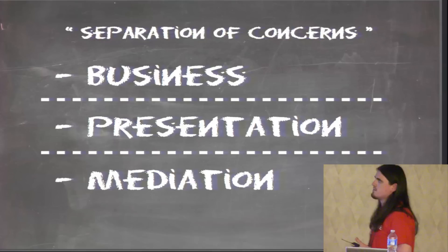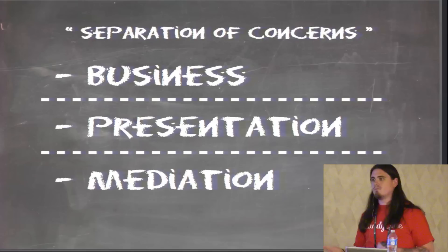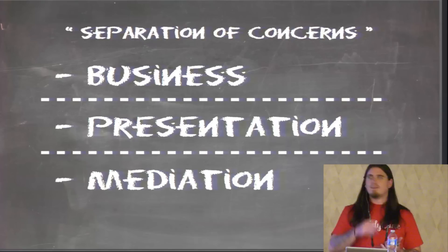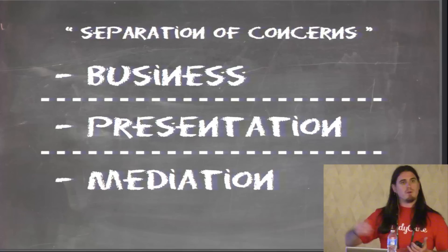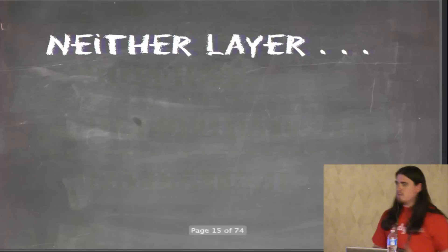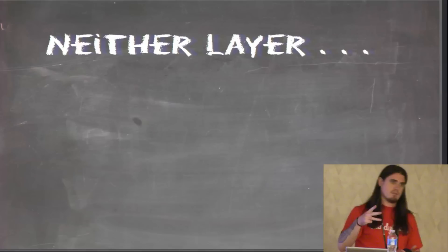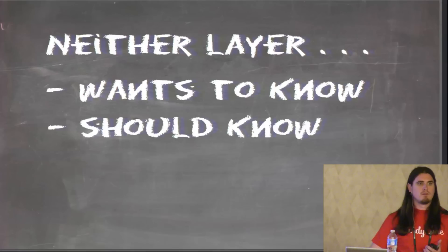Exactly — separation of concerns. This is the whole reason behind MVC. MVC is about separating your concerns. The idea behind MVC, the idea behind design patterns, is scale. You can encounter a problem and resolve it in a standard way. When another developer comes along and sees you've used a certain pattern, he's going to be able to interface with that and know what he's doing straight away. If you want to remember three things about how you should be working with MVC: neither layer wants to know about the other, should know about the other, or can know about the other.